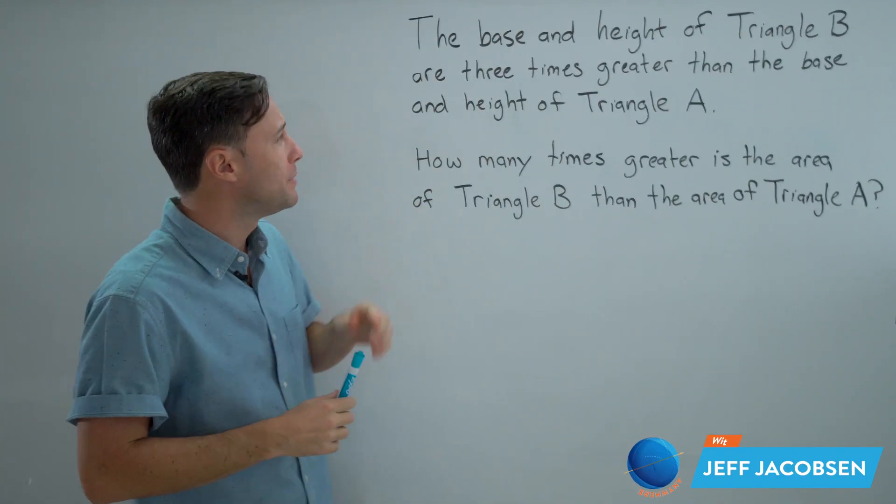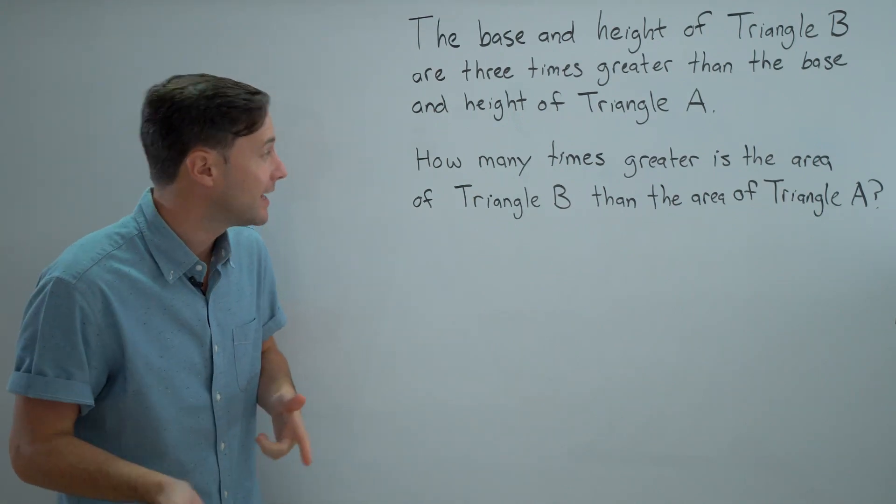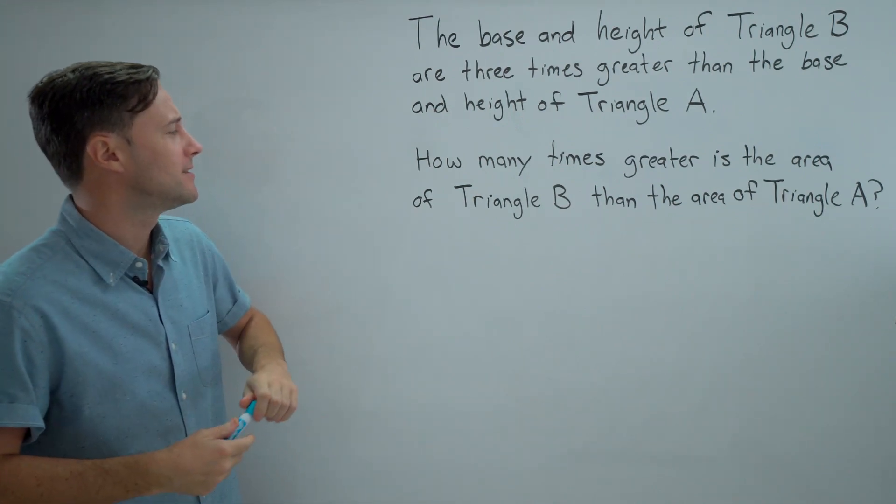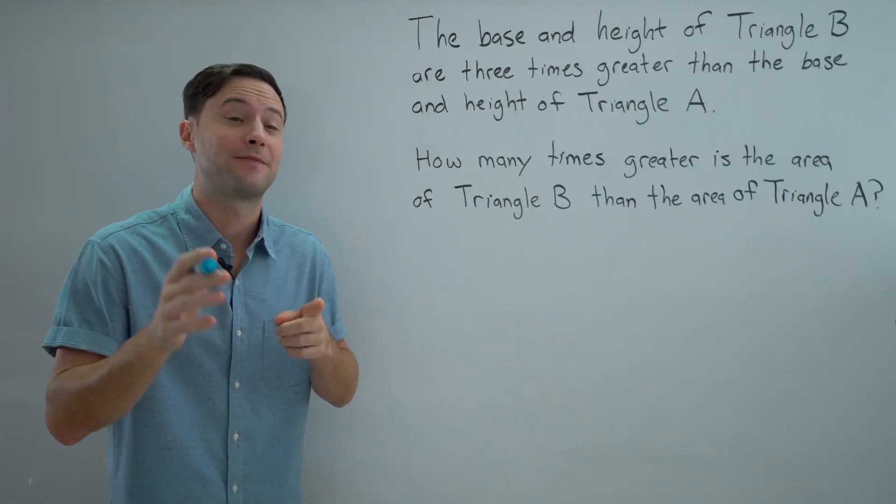The base and the height of triangle B are three times greater than the base and height of triangle A. How many times greater is the area of triangle B than the area of triangle A? Let's find out.